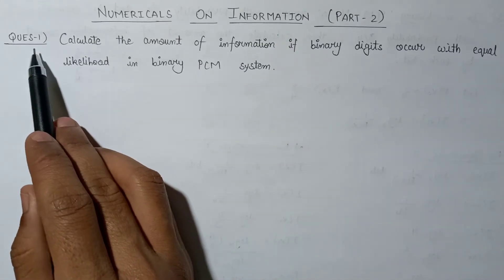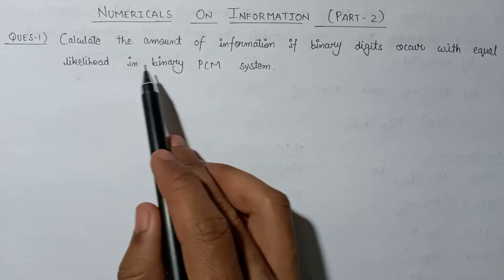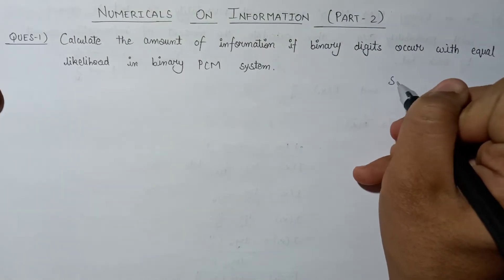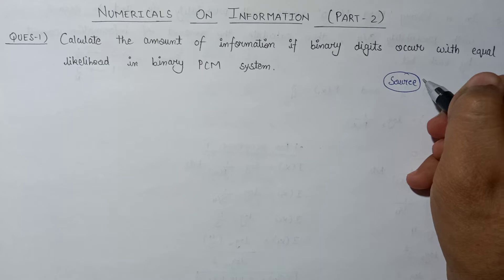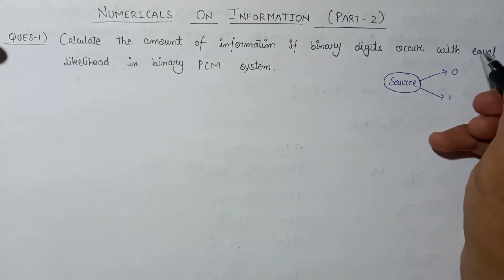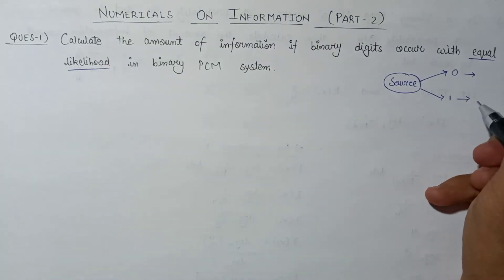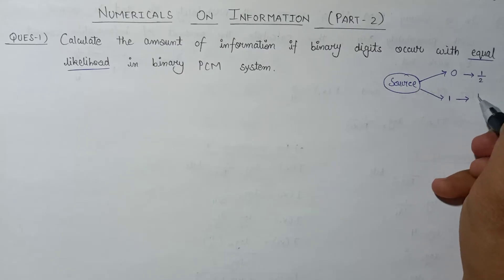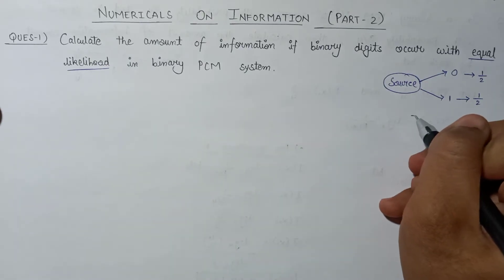Here is question number one: calculate the amount of information if the binary digits occur with equally likelihood in the binary PCM system. Since it is a binary PCM system acting as a source, it will emit only two digits, 0 and 1. The equally likelihood condition means the probability of occurrence of 0 as well as 1 is equal to 1/2 each — that is the meaning of equal likelihood, or we can say the probabilities are equally probable.